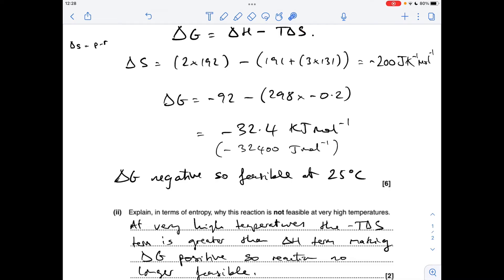Delta S is negative, so this all becomes positive. So you combine in this negative delta H with a big positive T delta S term, which ultimately makes delta G positive, and therefore the reaction is no longer feasible.